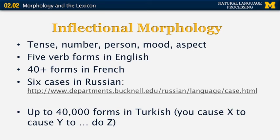English words have at most five word forms — for example, the word 'to be' has: am, are, was, were, and been. However, there are 40 different forms in French and six cases in Russian. In Turkish, there can be as many as 40,000 forms of the same word — for example, a special form that means 'you can cross X to do Z,' so you can have a recursive set of rules that create really long words.